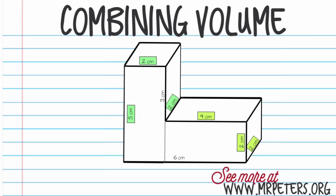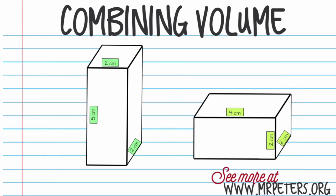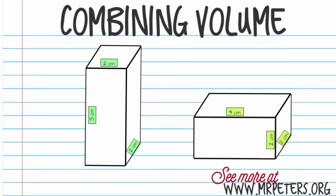Now you can start to see how this is broken up. We can see that we have a prism here and a prism here — both rectangular prisms. You can see that I have highlighted certain numbers, because those are the numbers we're going to use. Let's pull them apart to further illustrate this.